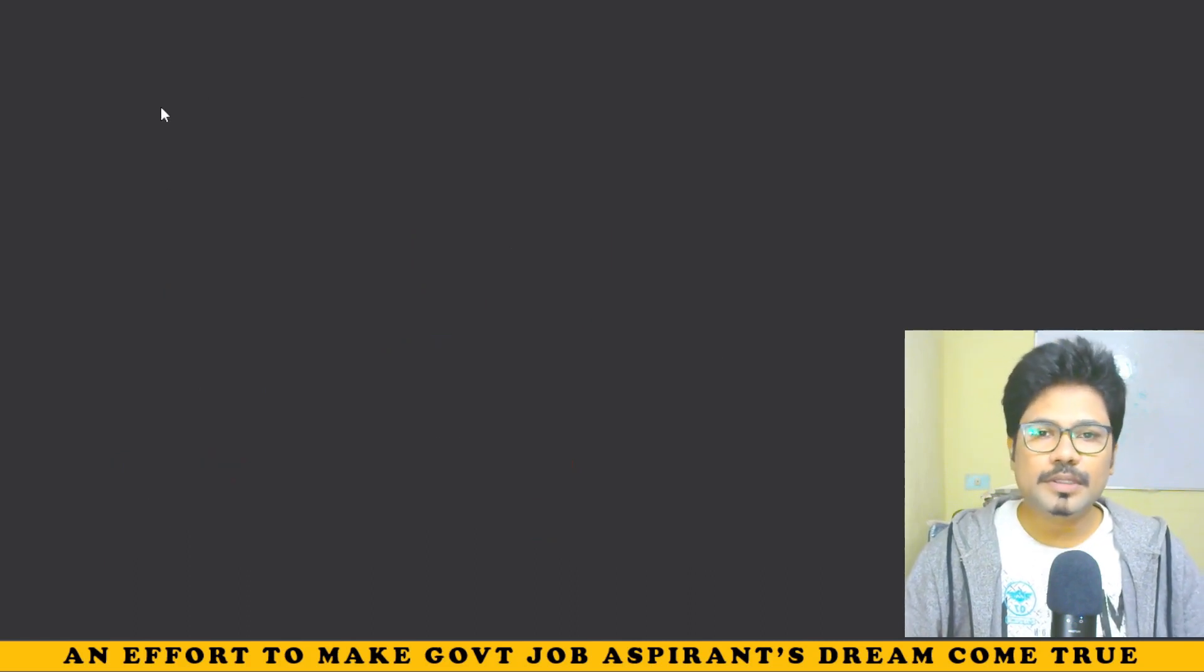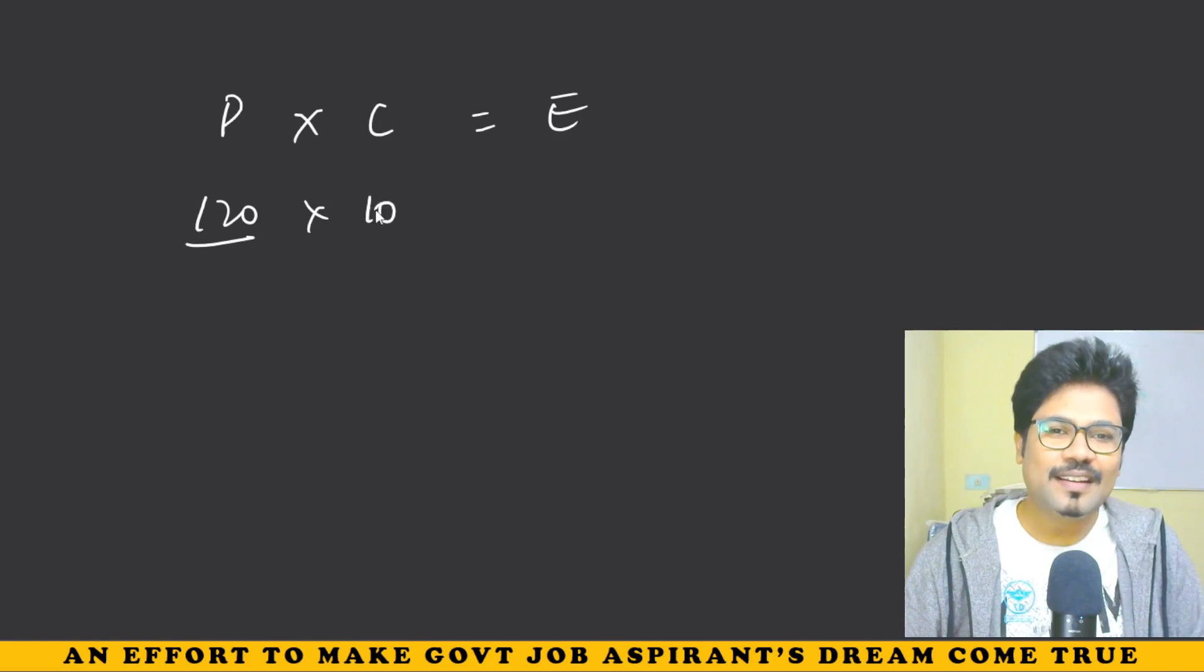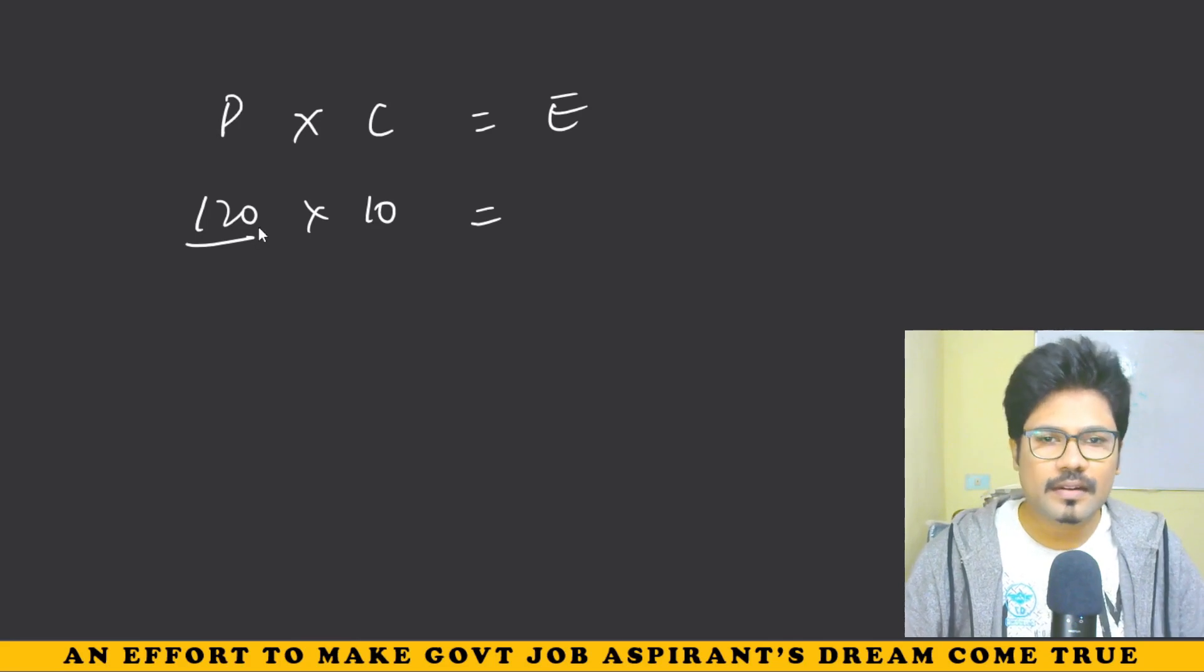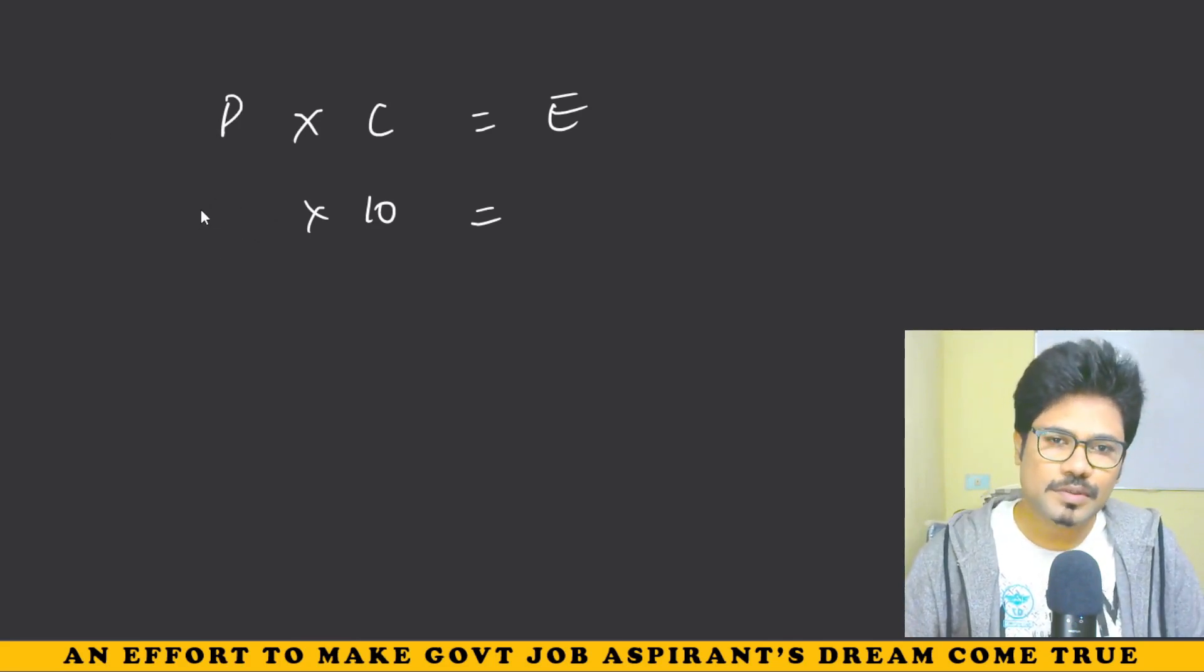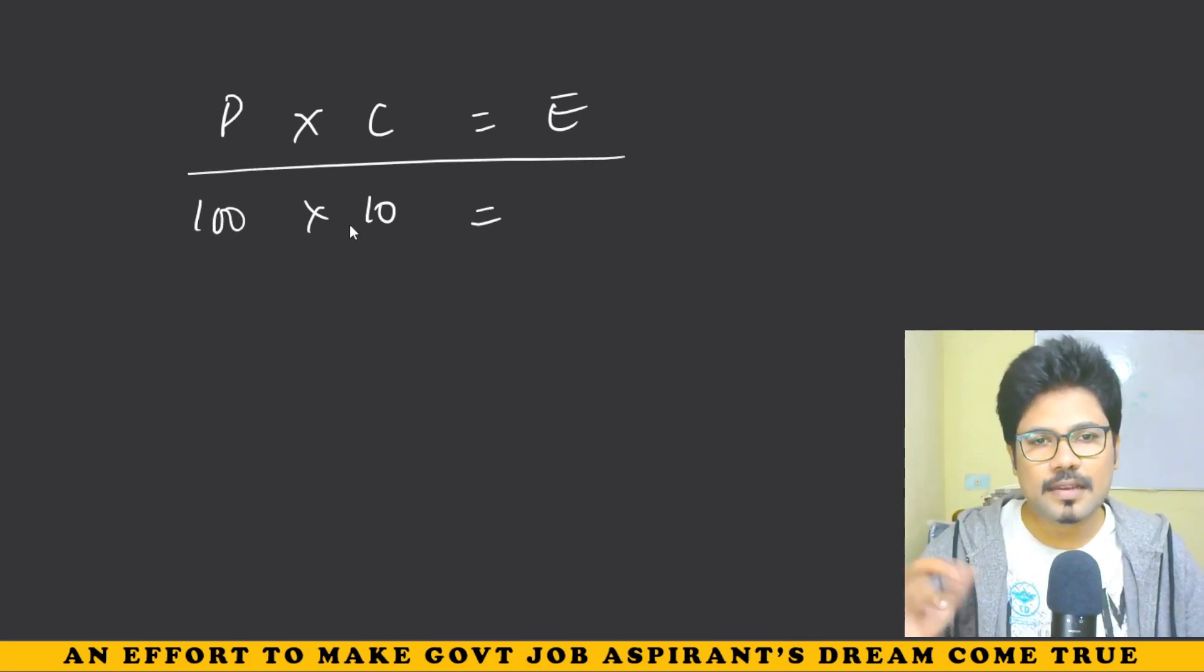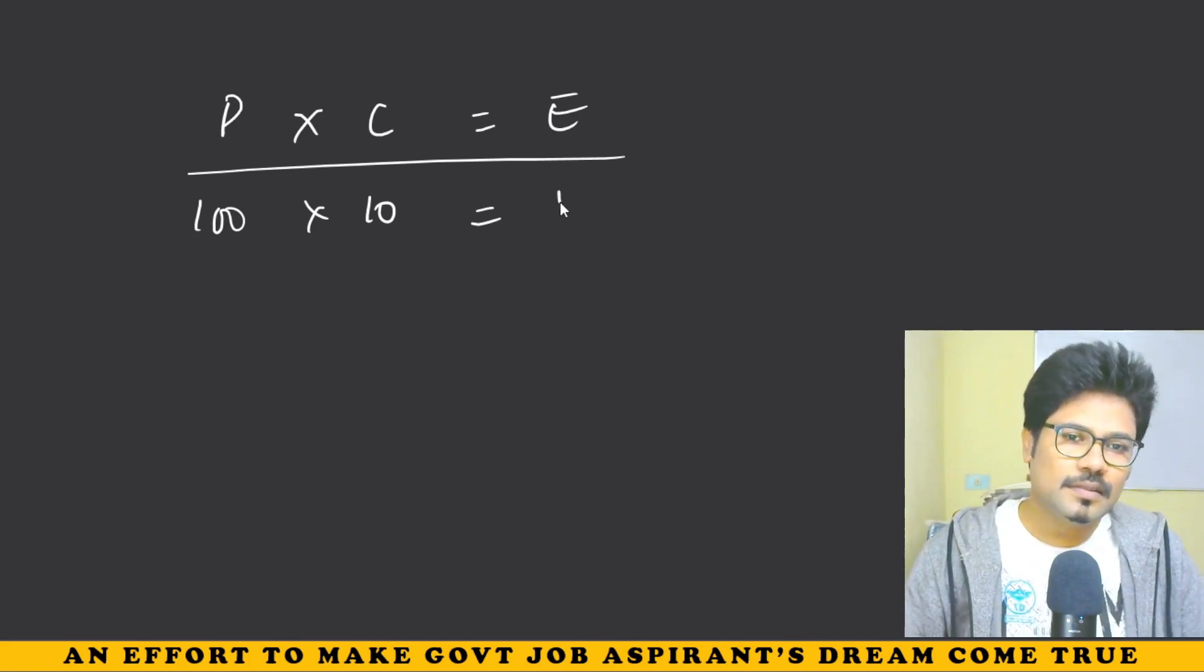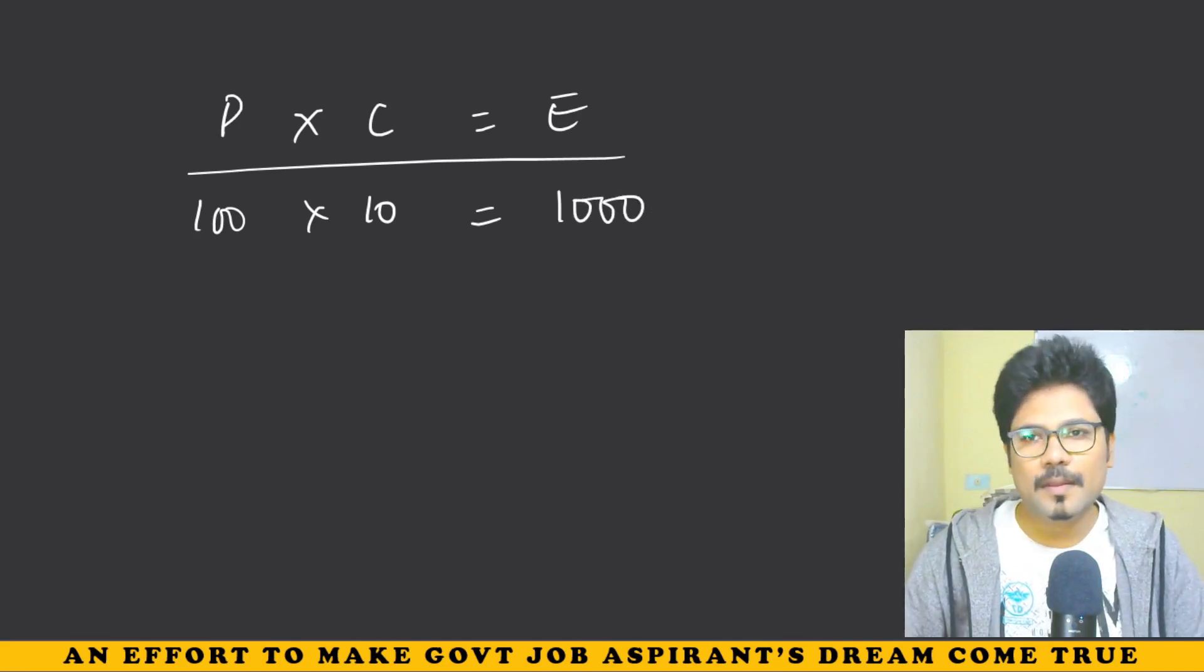The same thing. P into C is equal to E. Instead of 120 rupees dairy milk, let me make it 100 rupees dairy milk silk. Let's buy 10 items. Then the expenditure is 1000 rupees.